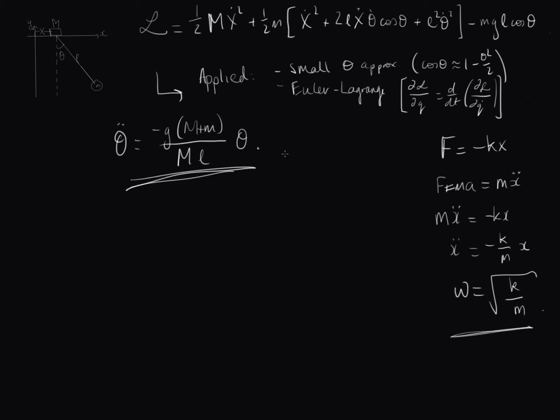So now we can see there's quite a bit of similarity between here and this. And in fact, we have almost the exact same form. So we can write that this is simply a simple harmonic oscillator. It's what we would call it because it's undergoing simple harmonic motion, with a period of the square root of g times m plus m over big M times L.